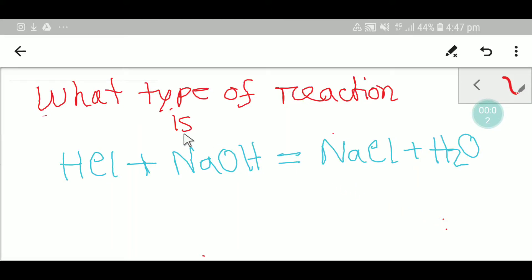Welcome to Chemistry Tutorial 360. Today we are going to learn about the type of this reaction. This is hydrochloric acid, this is sodium hydroxide, and this is sodium chloride and water.